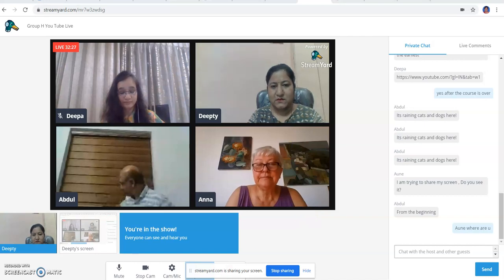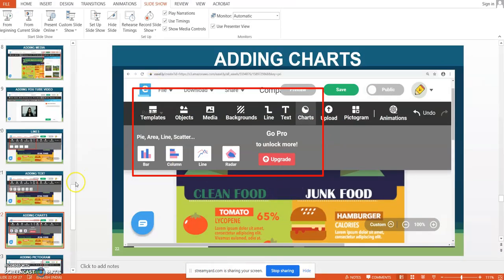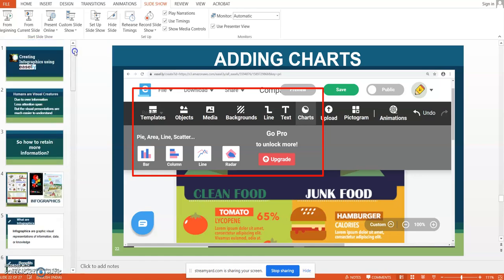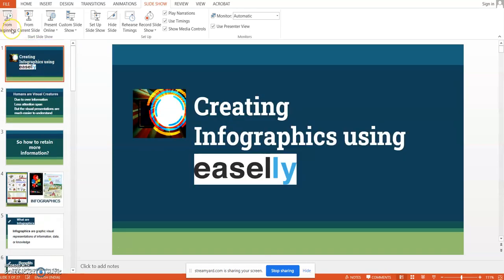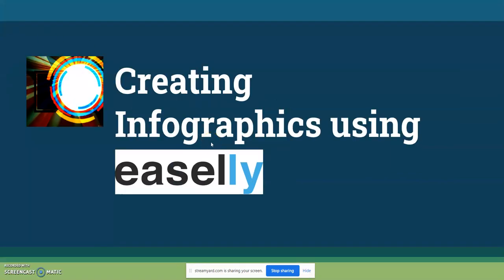Hello? Yes. Now you can see something? I can see. Abdul, can you see? Deepak, can you see? Yeah, I can see. I also can see you. See me or my presentation? No, only you.